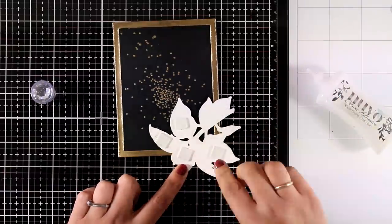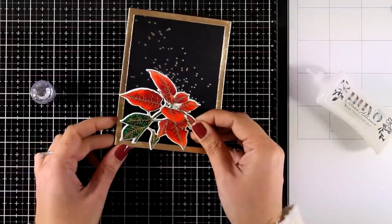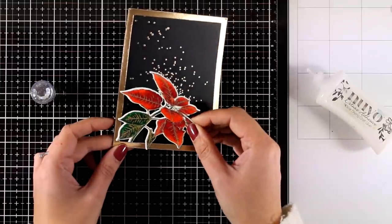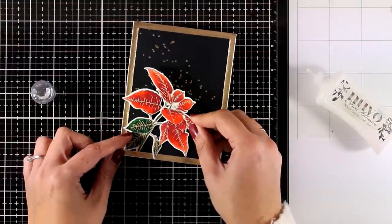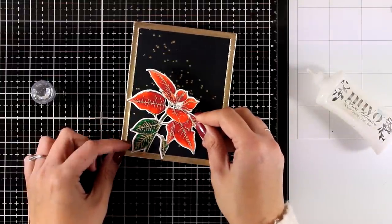For my poinsettia I have added glue at the base of the stem, but for the leaves I went with foam squares at the back, so I will have some dimension at the top.